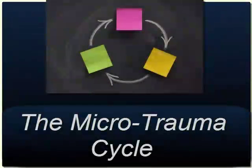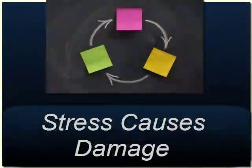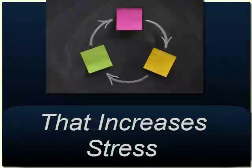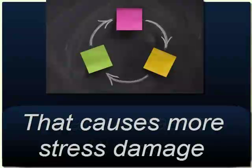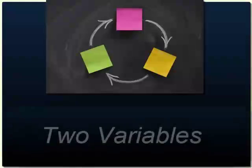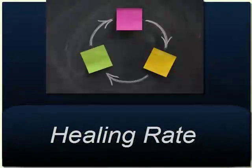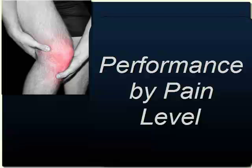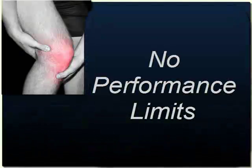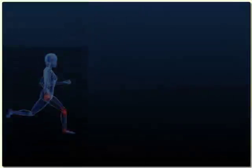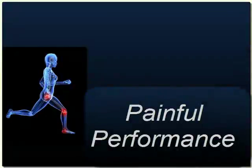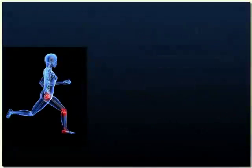Microtrauma is a cycle where performance stress causes damage that increases stress that causes more damage. The cycle has two main variables: the rate of damage and healing speed. Many, if not most, competitive sports participants manage their performance by pain level. First, there's the no-pain stage, where microtrauma accumulates until pain starts. Second, there's the painful performance stage, when pain limits performance but not enough to inhibit competition.